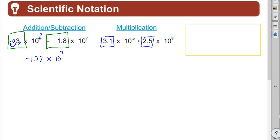So 3.1 times 2.5, let me punch that in my calculator: 3.1 times 2.5, I got 7.75. And remember, x to the a times x to the b equals x to the a plus b. You add the exponents. So 7.75 times 10 to the sixth. Multiplication.